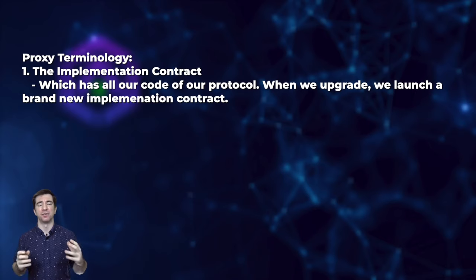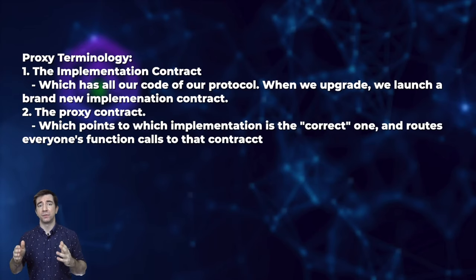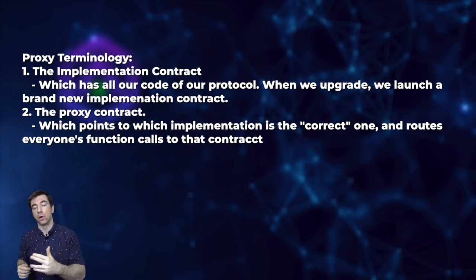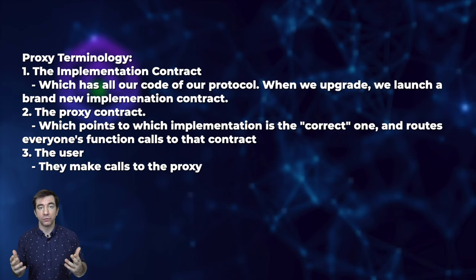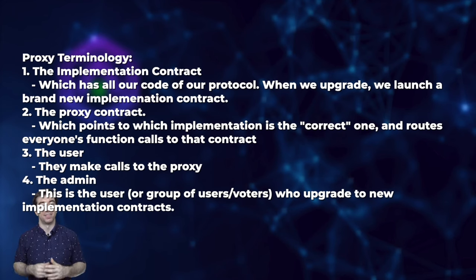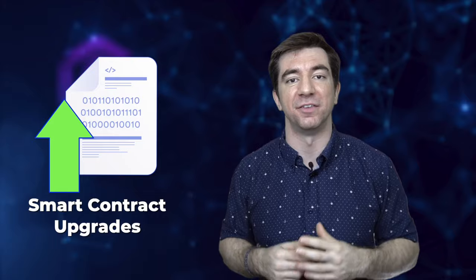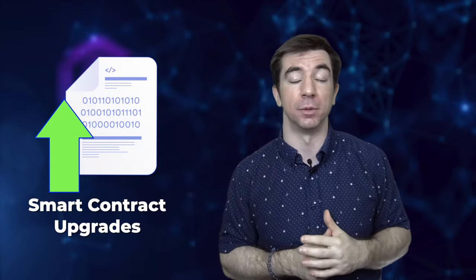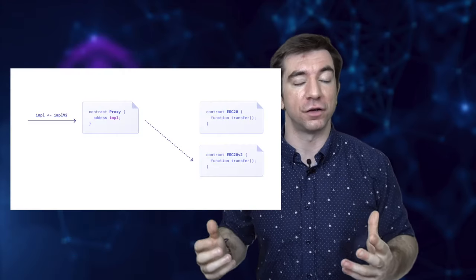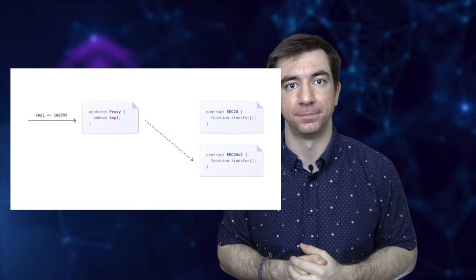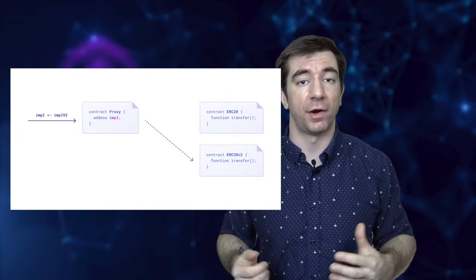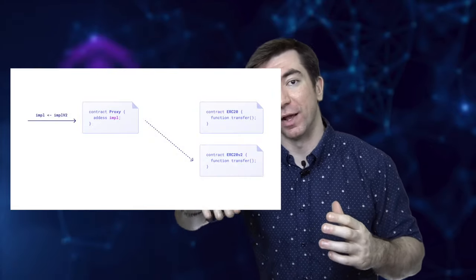When we're talking about proxies, there are four pieces of terminology to keep in mind. First is the implementation contract, which has all of our logic and all the pieces of our protocol — whenever we upgrade, we launch a brand new implementation contract. The proxy contract points to which implementation is the correct one and routes everyone's calls there. The user makes function calls through the proxy contract. And the admin is the one who decides when to upgrade and which contract to point to. All storage variables are stored in the proxy contract, not in the implementation contract — so when I upgrade to a new logic contract, all my data stays on the proxy.